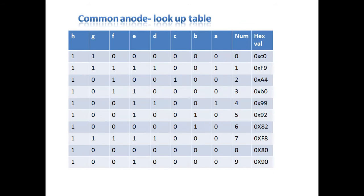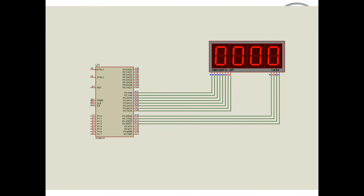I found the equivalent hex values for all digits I want to display on the seven segment. Segment A is connected to the LSB and H segment to the MSB of the IO port. The values are: 0 → 0xC0, 1 → 0xF9, 2 → 0xA4, 3 → 0xB0, 4 → 0x99, 5 → 0x92, 6 → 0x82, 7 → 0xF8, 8 → 0x80, 9 → 0x90. These are the lookup table values as per my connection.